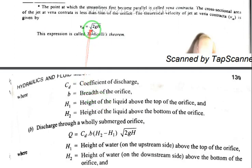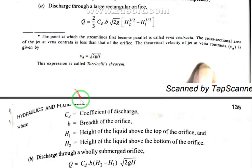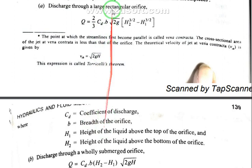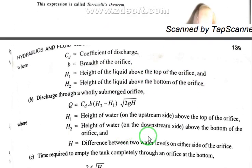Here we will talk about the denotation of variables. Cd is the coefficient of discharge. b is the width of the orifice. h1 is the height of the liquid above the top of the orifice, and h2 is the height of the liquid above the bottom of the orifice.